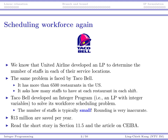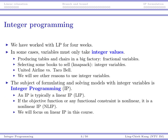Simply rounding up or down does not give you an optimal solution for integer programs. For Taco Bell, an integer program is really needed. Once this was done, 12.5 million dollars could be saved per year. Today's topic is integer programming. We have worked with linear programs for more than four weeks, and in some cases variables should only take integer values. For example, producing tables and chairs in a big factory is fine with fractional variables, but selecting books to sell — like the knapsack problem — requires integer variables.